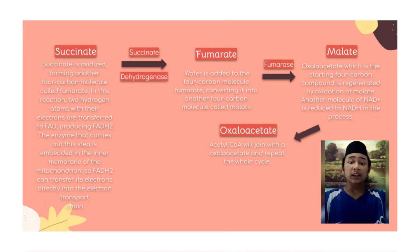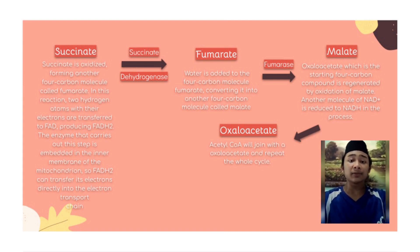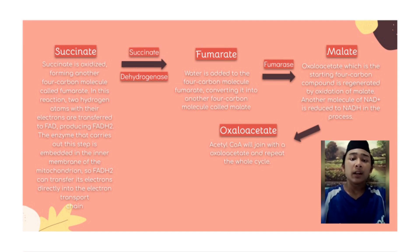In step six, succinate is oxidized, forming another four-carbon molecule called fumarate. In this reaction, two hydrogen atoms — and their electrons — are transferred to FAD, producing FADH2. The enzyme that carries out this step is embedded in the inner membrane of the mitochondria, so FADH2 can transfer its electrons directly into the electron transport chain. This step is catalyzed by succinate dehydrogenase.